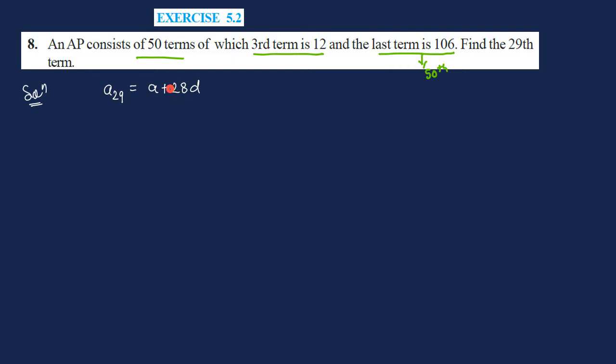Now what data is given? We have 50 terms total and the third term is 12. So the third term a₃ is given as 12, and this equals a plus 2d, because here we have 3, so here it becomes 2. Also given is the last term, meaning the 50th term is given as 106.